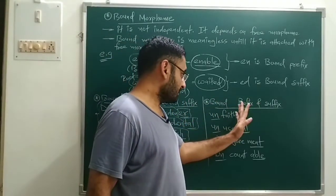Now we will discuss bound morphemes. In free morphemes, we said it is independent, comes alone, has its own meaning, and does not require any other word to indicate its meaning. Bound morphemes are the opposite of free morphemes.